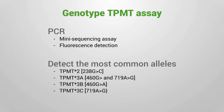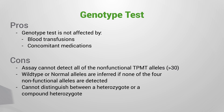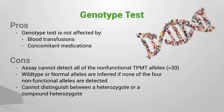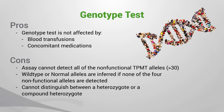The genotype assay is performed by a mini sequencing assay with fluorescence detection. This assay can detect the four most common non-functional alleles. The genotype test is not affected by recent blood transfusions if saliva is collected for genetic testing. In addition, the genotype test is not affected by medications that inhibit TPMT enzyme activity.